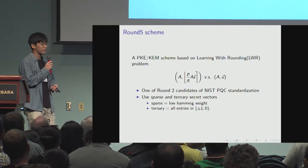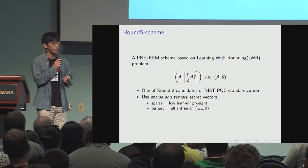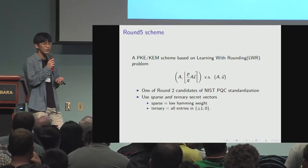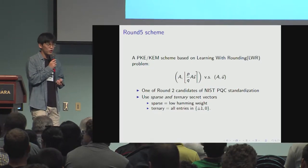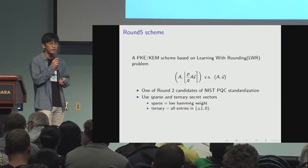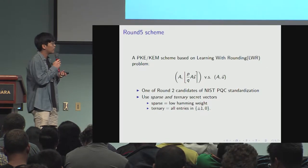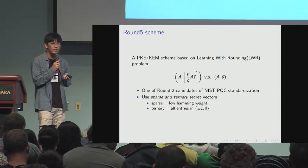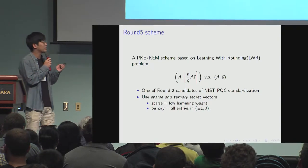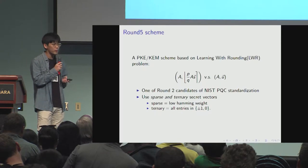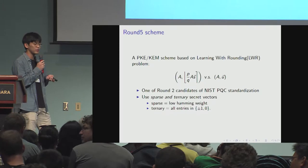Round Five scheme is a public key encryption and key encapsulation mechanism scheme based on learning with rounding. This is one of the round two candidates of the NIST PQC standardization, and it has the unique feature of usage of sparse and ternary secret vectors. Sparse means that the secret vector has low Hamming weight, and ternary means the components consist of plus one, minus one, and zero.